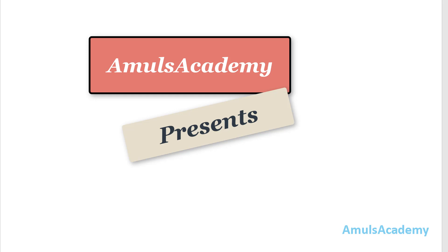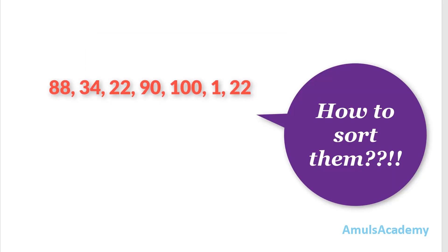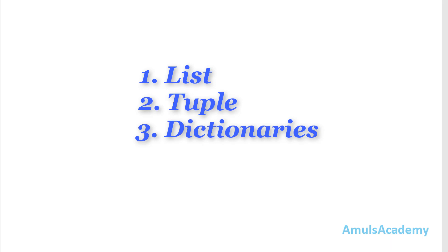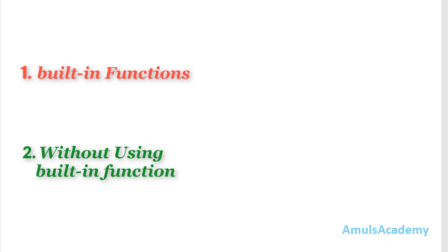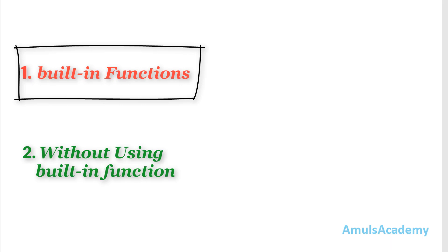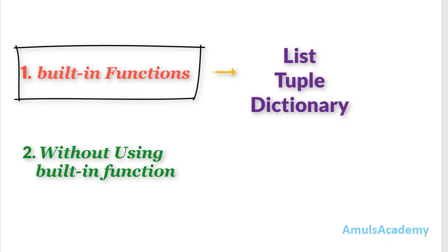Hello and welcome to Python programming tutorials by Amuls Academy. Today we are discussing how we can sort numbers in Python — specifically how we can sort lists, tuples, and dictionaries, because to sort we need a group of numbers and we can store multiple numbers in a list, tuple, or dictionary. We can sort in two ways: one using built-in functions, and another by writing the program without built-in functions.